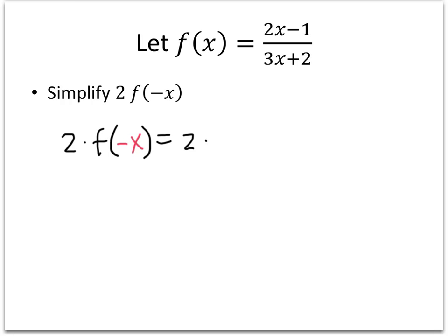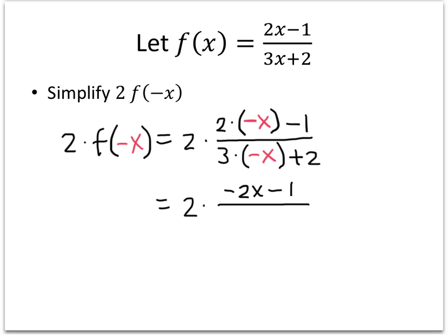So f(-x) is going to be 2 times negative x minus 1 divided by 3 times negative x plus 2. Let's simplify the top and the bottom. On the top, we've got 2 times negative x is negative 2x minus 1. On the bottom, 3 times negative x is negative 3x plus 2.